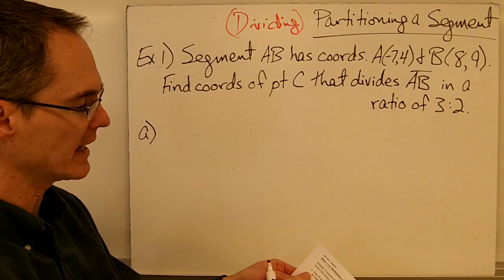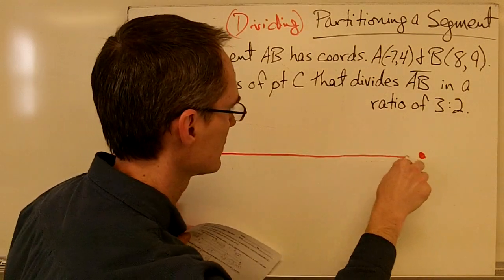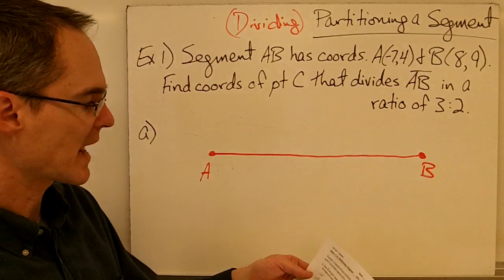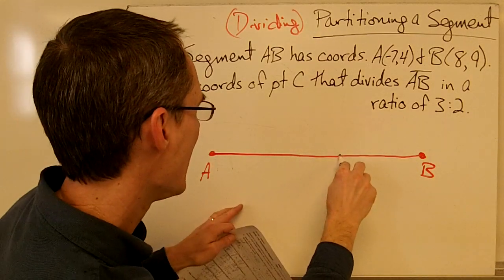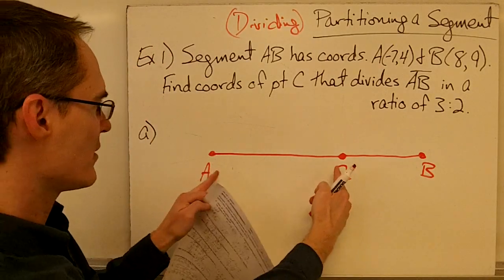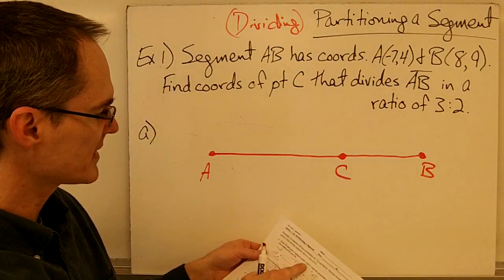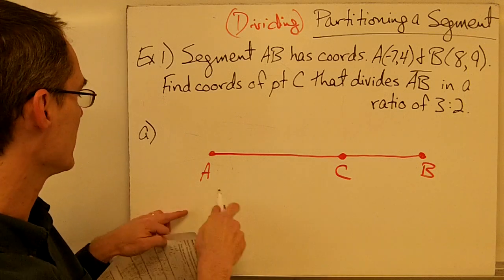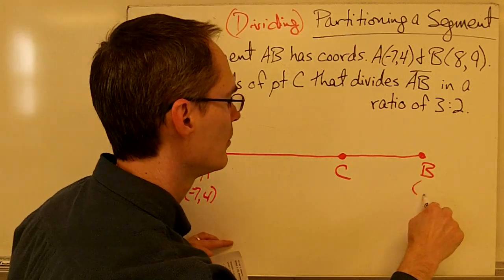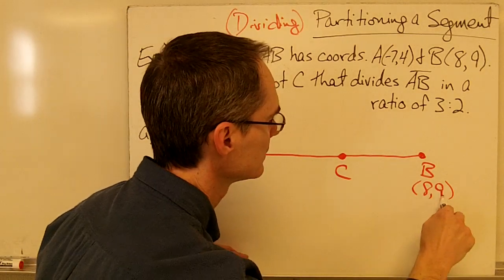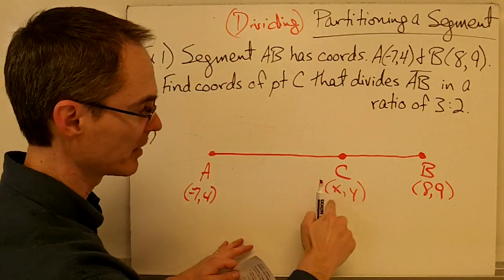Part A says draw segment AB. So let me draw segment AB here, with point C in between points A and B. Point C is my point that's going to divide it into a ratio of 3 to 2. I'll put it roughly at the 3 to 2 position. Label the coordinates of A, B, and C. Point A is negative 7, 4. Point B is 8, 9. And point C — I don't know those coordinates yet, so I'll call them X, Y.